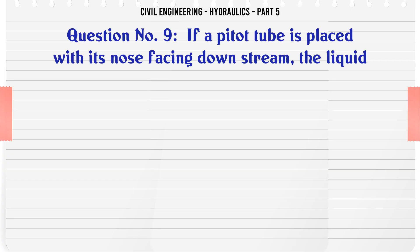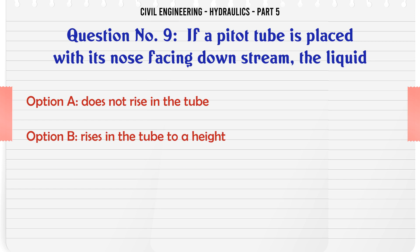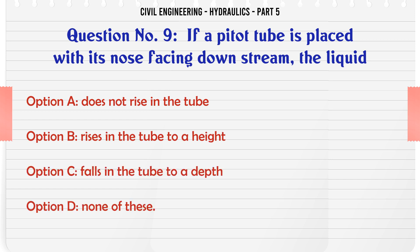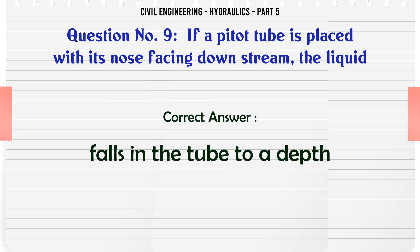If a pitot tube is placed with its nose facing downstream, the liquid: A. does not rise in the tube, B. rises in the tube to a height, C. falls in the tube to a depth, D. none of these. The correct answer is A: does not rise in the tube.